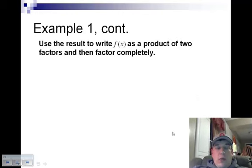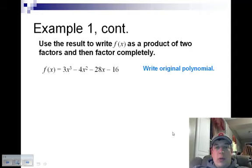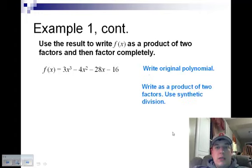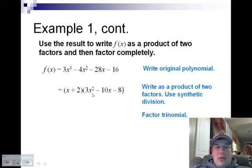Using that information, I'm going to write out the original polynomial: 3x cubed minus 4x squared minus 28x minus 16. Based on the division that I had done previously, I'll write the product as two factors. x plus 2 is what we originally were told, and 3x squared minus 10x minus 8 was what I got through the synthetic division. Then I can factor this quadratic trinomial by breaking it up into 3x plus 2 and x minus 4. This is factored completely: x plus 2 times 3x plus 2 times x minus 4.